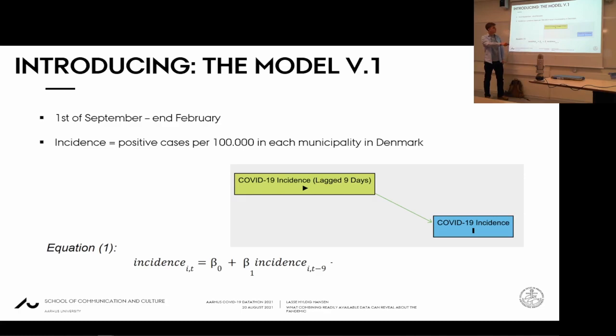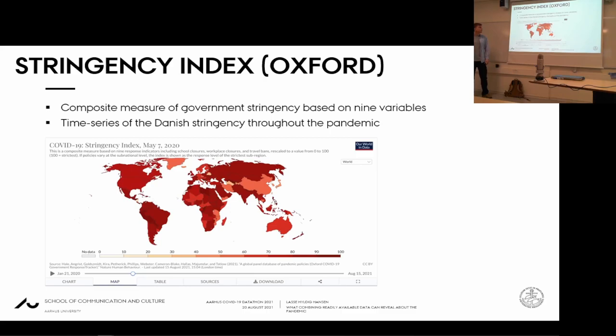COVID-19 incidence is the Y variable. We put lagged incidence at nine days — the best incubation time found for Denmark. Incidence depended on how long it takes for someone to get infected, get tested, and become an infectious case that could infect more people. That's nine days, and we model it that way.